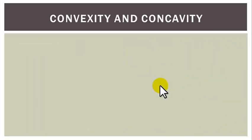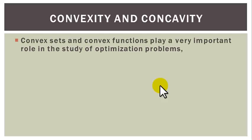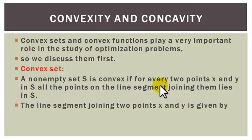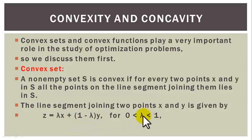Now let us look at the concept of convexity and concavity. Convex sets and convex functions play a very important role in the study of optimization problems, so we have to discuss them first. Convex set: a non-empty set S is said to be convex if for every two points X and Y in S, all the points on the line segment joining these two points also lie in S. The line segment joining two points X and Y is given by: Z equal to lambda X plus (1 minus lambda) Y, for lambda lying between 0 and 1.